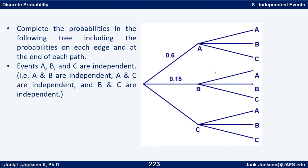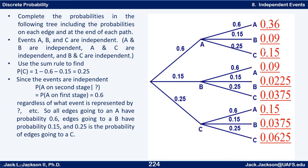The first thing we know is that 0.6 plus 0.15 plus the probability of C must add up to 1. That gives us 0.75, so 1 minus 0.75 leaves 0.25 for C. Since these are independent events, the probability of A is 0.6 every time regardless of what happened before — and similarly, P(B) is 0.15 and P(C) is 0.25 every time.